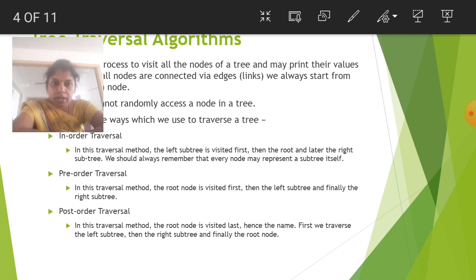The next is pre-order traversal. In this traversal method, the root node is visited first, then the left subtree and finally the right subtree. Then post-order traversal. In this traversal method, the root node is visited last, hence the name. First we traverse the left subtree, then the right subtree and finally the root node.